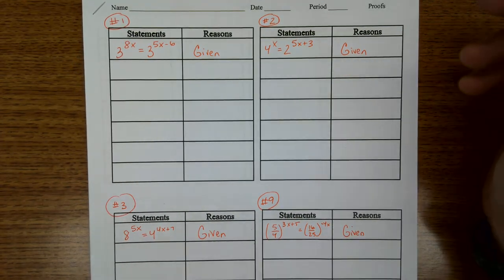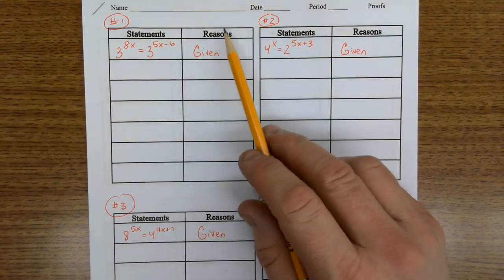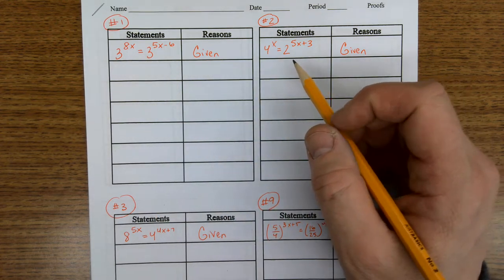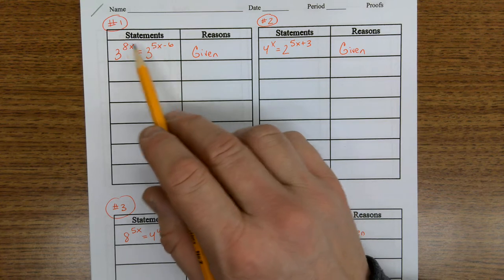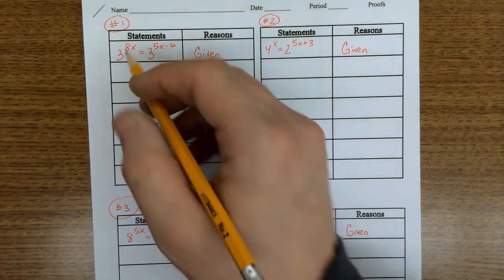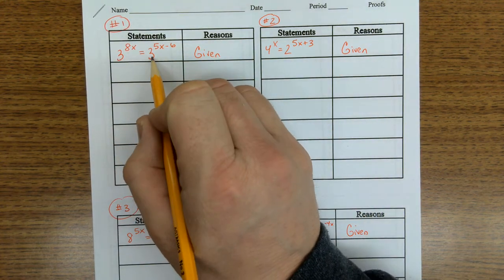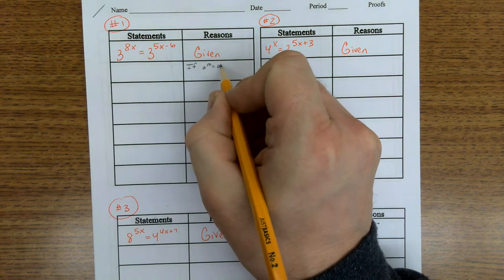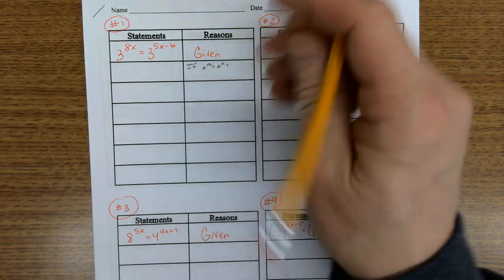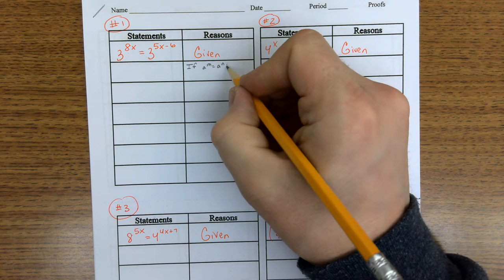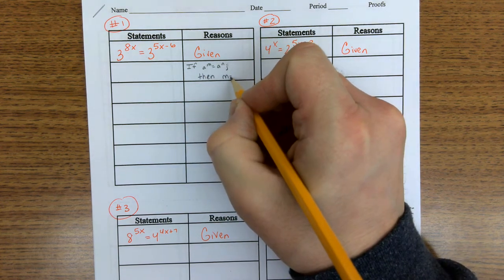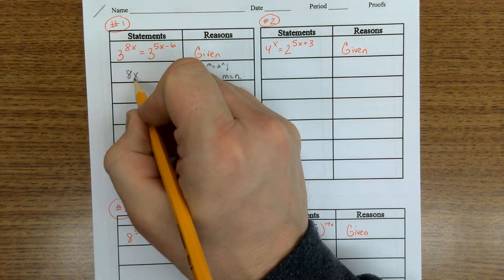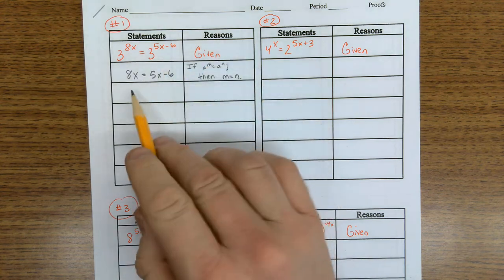For problem number 1, we're going to set this up with a proof table where we have statements on the left and reasons on the right. We're just going to take this equation and solve it. The problem is the variable is in the exponent, so we have to get the exponent down. These bases line up, so we have this rule that says if a to the m equals a to the n, then the exponents are the same. We have 3 and 3, so we can drop these down and now deal with just this equation.